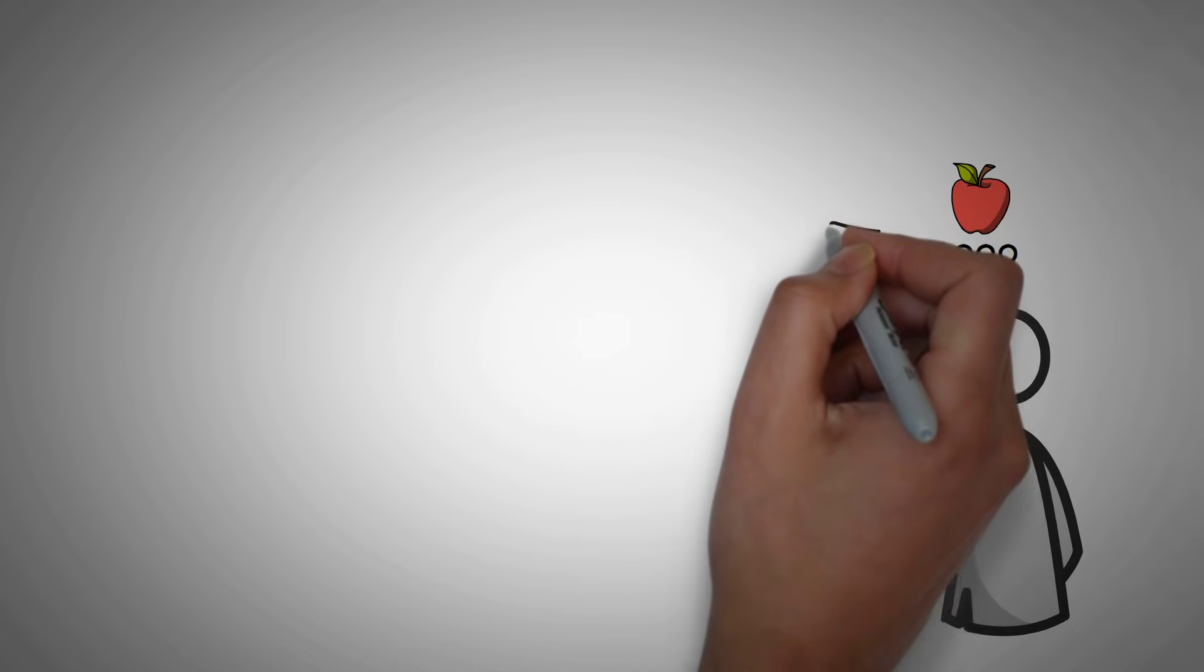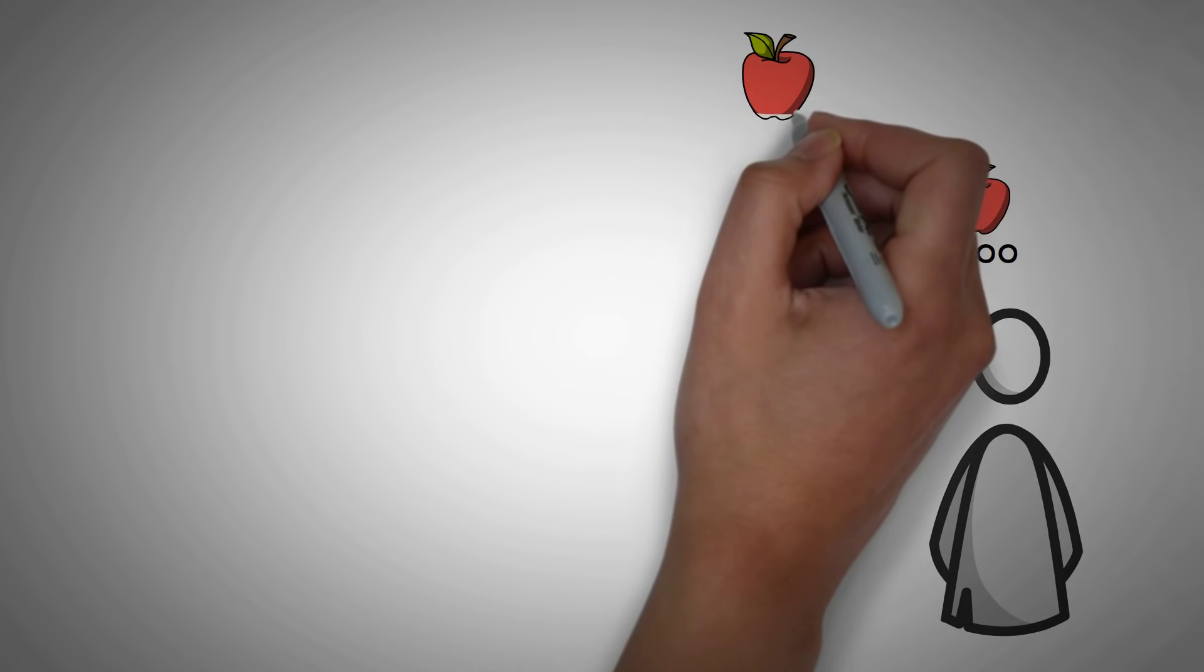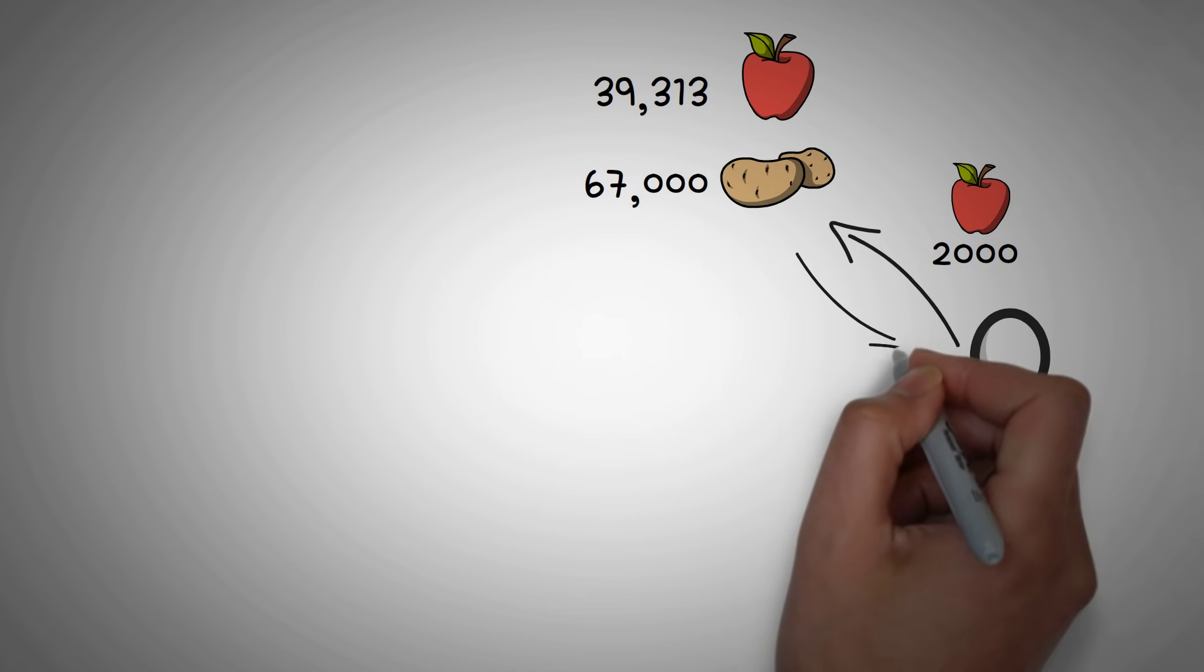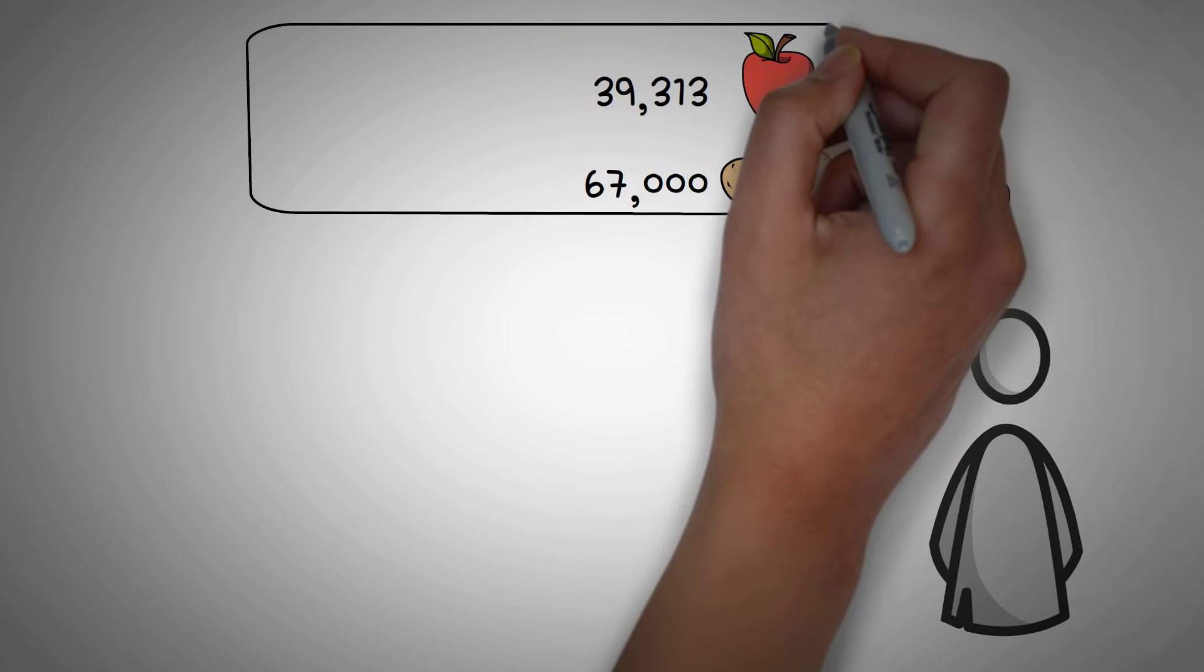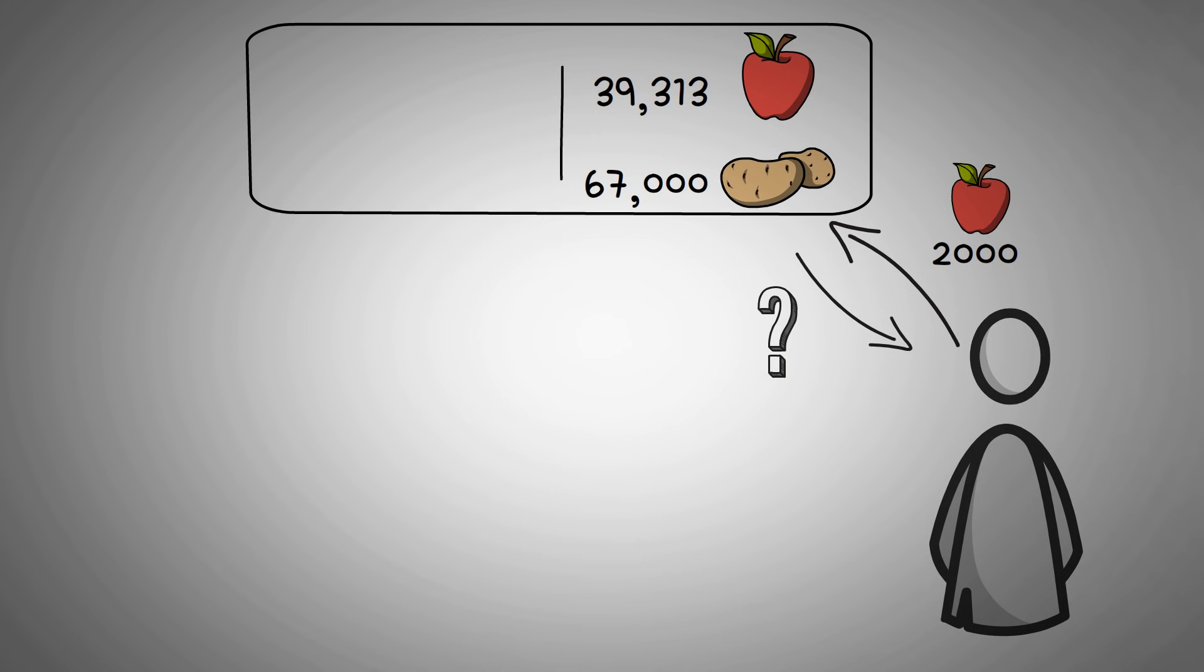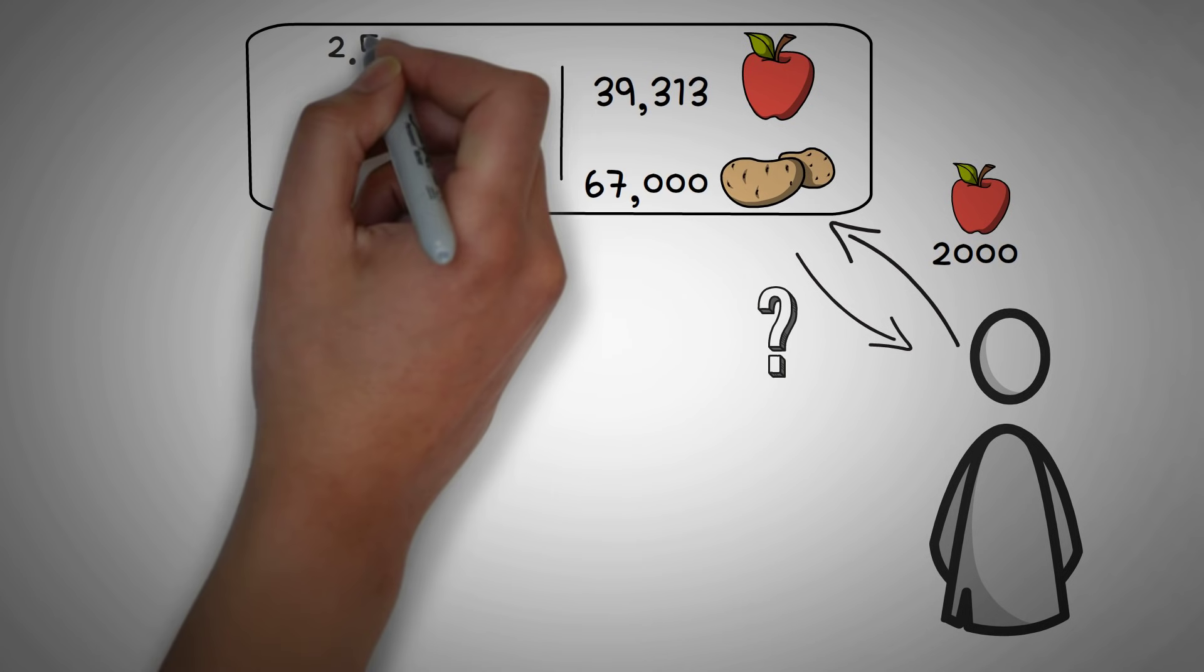Let's do one more example really quick just to drive it home. This time, an apple farmer comes along with 2,000 apples. So he adds them to the liquidity pool, and now there are 39,313 apples. But we need to figure out how many potatoes to give him. If you want to, you can pause this video and try to come up with a number on your own. Just for fun, leave a comment of what you come up with in the comment section below.